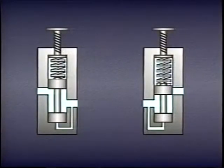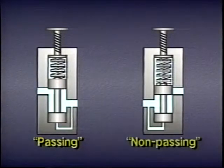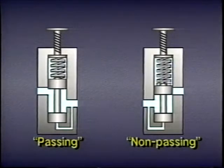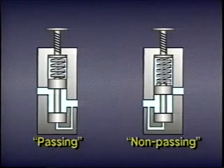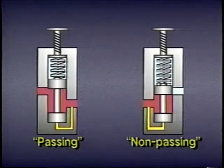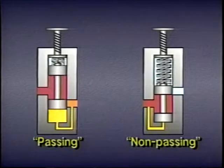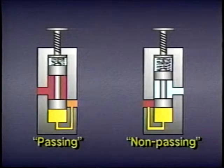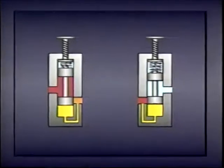A pressure control valve is either normally passing or normally non-passing, sometimes referred to as simply passing or non-passing, depending on the position of the spool in its normal non-actuated state. The valve will change from passing to non-passing, or from non-passing to passing, with changes in pressure at the valve.